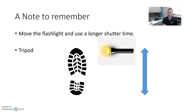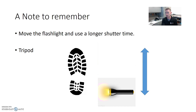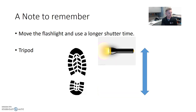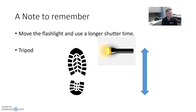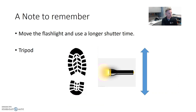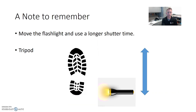Sometimes we have to move the flashlight to get really good imagery with oblique lighting. It might be multiple flashlights, or we use a longer shutter speed and actually move the flashlight so we don't get just one big hot spot. That's the difference between what you have here versus where you have the hot spot. Move the flashlight.